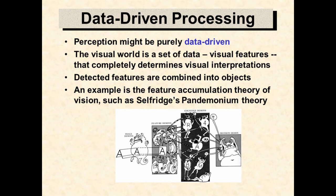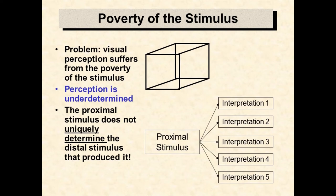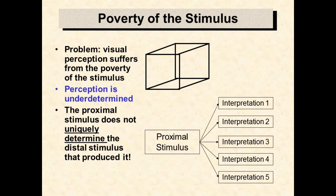The problem with a purely data-driven perceptual system is that the visual information detected by the eye — the proximal stimulus — is not sufficient to uniquely specify the properties in the world that caused it. That is, one proximal stimulus is consistent with many different interpretations, only one of which is correct. Consider the Necker cube: if we watch it long enough, we will see that this proximal stimulus is ambiguous. It supports two very different three-dimensional interpretations. This situation is generally called the poverty of the stimulus, or the problem of underdetermination.